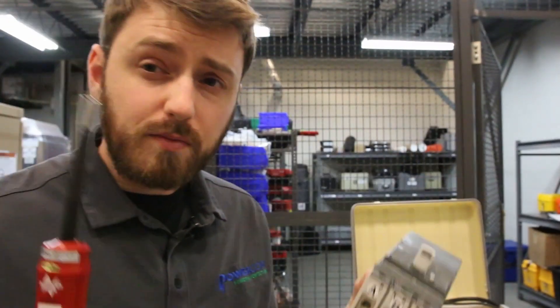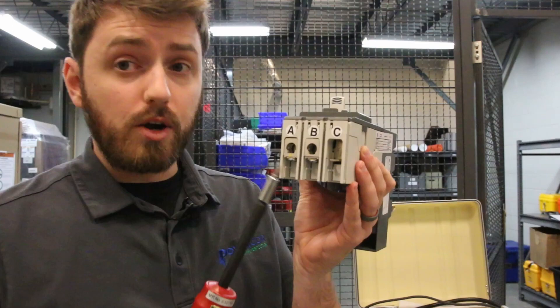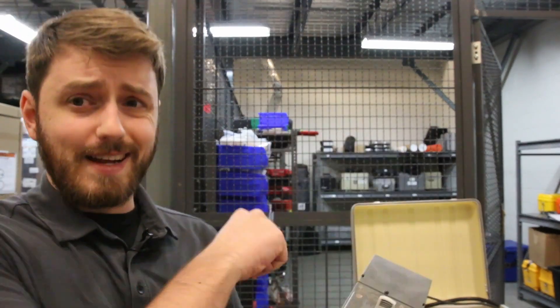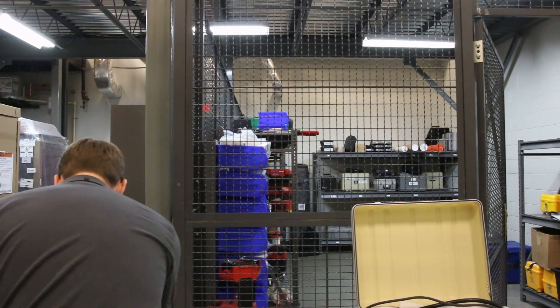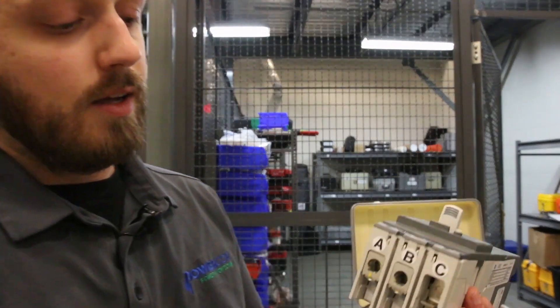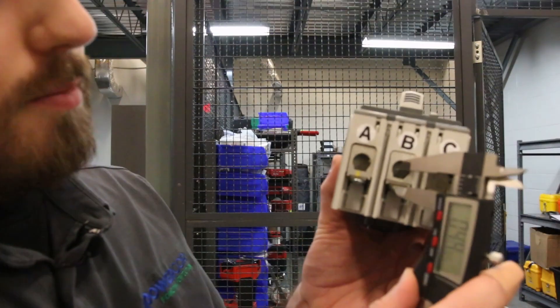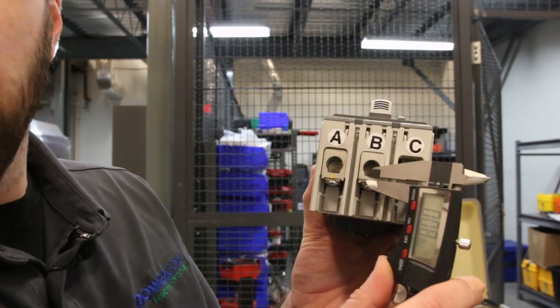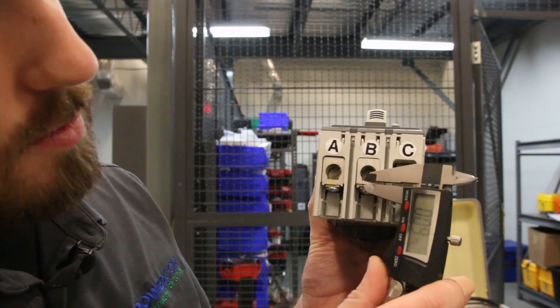So, my question is, ABB, what are you torquing this to? Because it's not the spec that's in the installation manual. Why is there torque seal on it if it's not torqued to the spec that's in the installation manual? Because that's not right. Also, one other thing, and maybe this is just a random thing. But the manufacturing tolerance on this is not very good.